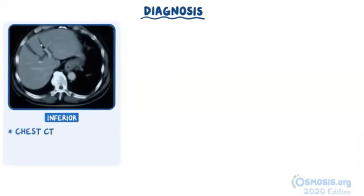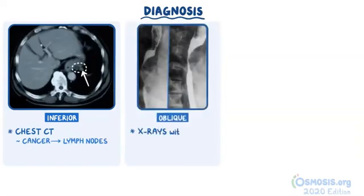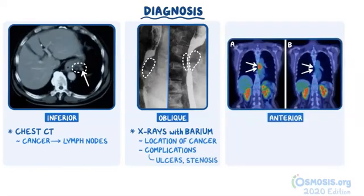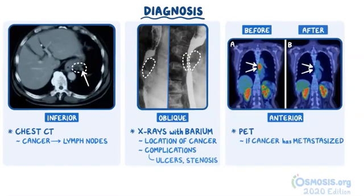Chest CT can be used to evaluate if the cancer has spread to nearby lymph nodes. X-rays with barium contrast of the upper GI tract can be useful to identify the location of the cancer and complications like ulcers or esophageal stenosis. A positron emission tomography, or PET, is useful to see if the cancer has metastasized and to evaluate the response to chemotherapy.